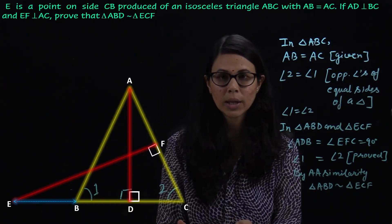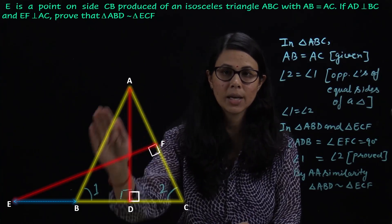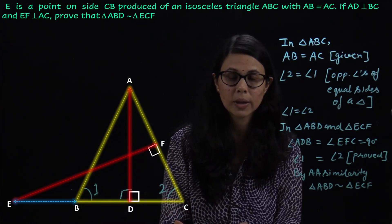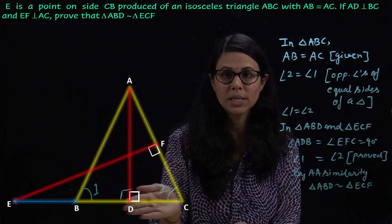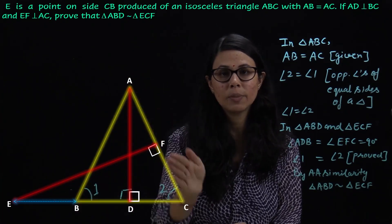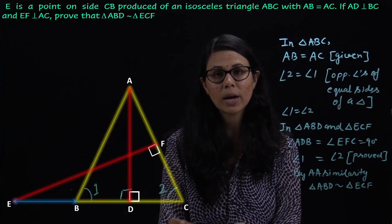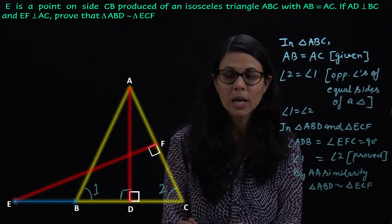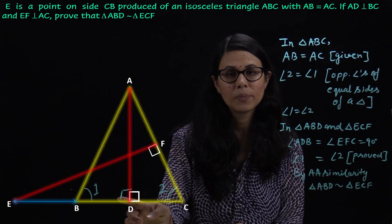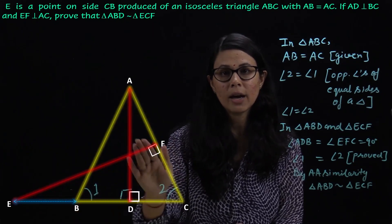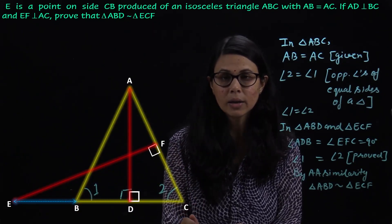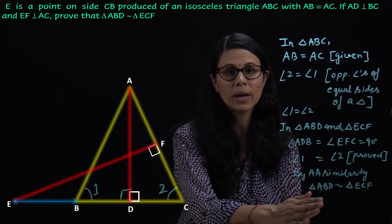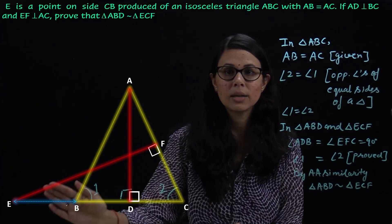Toh wapas ek baar question dekhte hain: humko ek isosceles triangle ABC given hai. Iski AB aur AC sides equal hain, isliye inke opposite angles — angle 1 aur angle 2 — bhi aapas mein equal honge. AD perpendicular BC hai, aur EF perpendicular AC hai. Humko proof karna tha ki triangle ABD aur triangle ECF similar hain. Dono triangles mein angle ADB = angle EFC = 90°, aur angle 1 = angle 2. Is tarah se, by AA similarity, triangle ABD is similar to triangle ECF.